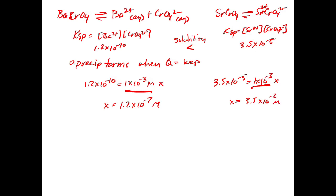So you need a much, much lower concentration of chromate in the case of barium chromate — 1.2×10⁻⁷ M — compared to 3.5×10⁻² M for strontium chromate.